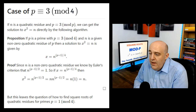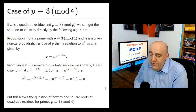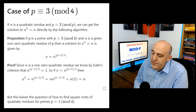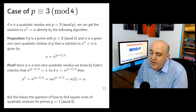The reason (p plus 1)/4 is well-defined is because p is congruent to 3 mod 4, so p plus 1 is congruent to 0 mod 4 and thus divisible by 4. We can prove this: since n is a non-zero quadratic residue, Euler's criterion gives n to the (p minus 1)/2 equals 1. Squaring x gives n to the (p plus 1)/2, which is n times n to the (p minus 1)/2, equals n times 1, which is n. So x squared equals n and we've found the square root.